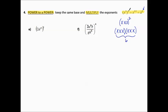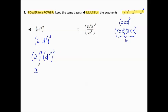Let's take a look at an example. First, it's helpful to think of 2 as 2 to the 1st. We have more than one power in this set of parentheses, so think of it as 2 to the 1st cubed and d to the 4th cubed, or 2 to the 1 times 3 and d to the 4 times 3. That gives 2 cubed and d to the 12th. 2 cubed is 2 times 2 times 2, which is 8. So this is 8d to the 12th.